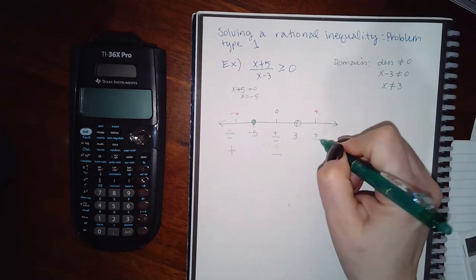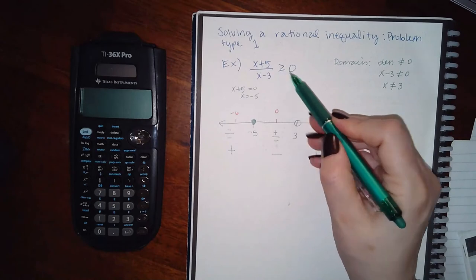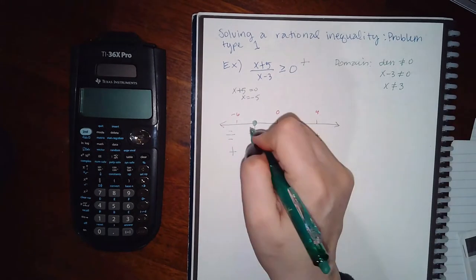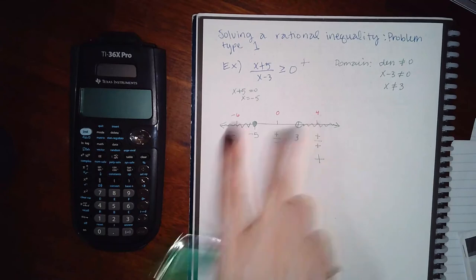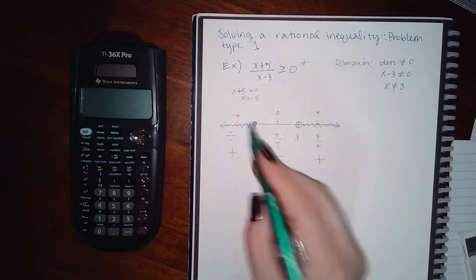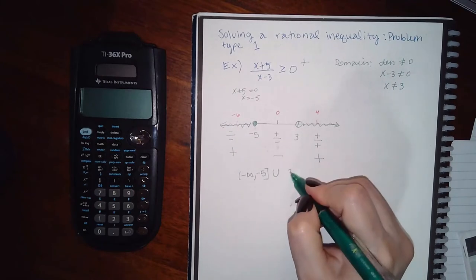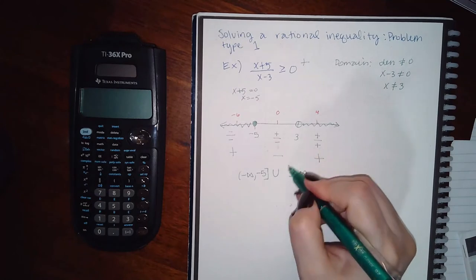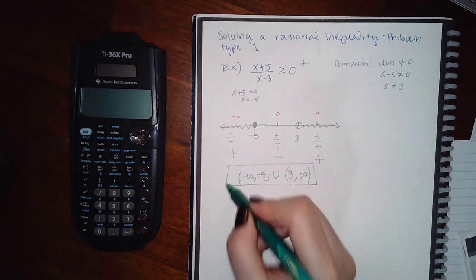Plugging in 4: positive in the top, positive on the bottom — ultimately positive. Since the inequality is greater than or equal to 0, I'm taking the positive regions. Both the leftmost and rightmost regions are positive, and there is a gap, so my interval has two terms: from negative infinity to negative 5 — solid means bracket — union, then from 3 to positive infinity — open dot means parentheses, and infinity always gets parentheses. And that's the answer.